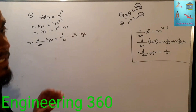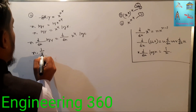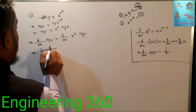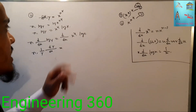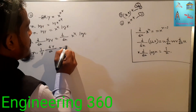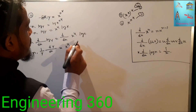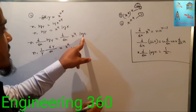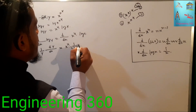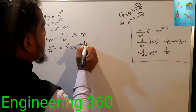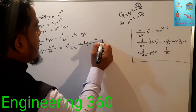The left side gives 1 by y times d/dx of y. On the right side, we apply the product rule: it equals x to the power x times d/dx(log x) plus log x times d/dx(x to the power x).